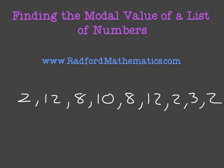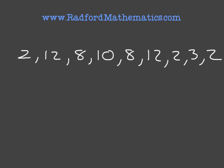Looking at this list of numbers, we can see that there's one number which repeats more than the others. We can see that 2 repeats three times in this list. This means that the mode of this list of numbers, or the modal value, is 2. We simply write mode equals 2.